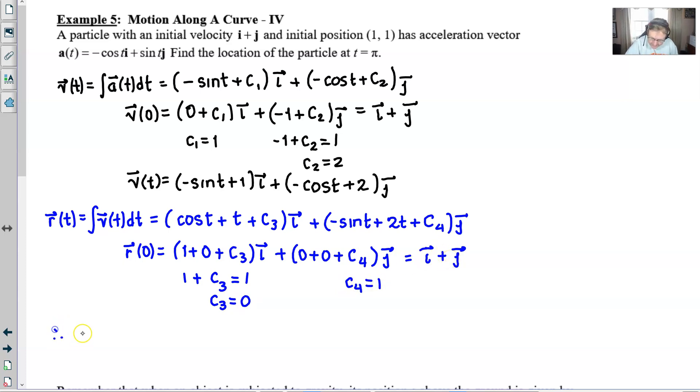So what that all says is that our vector for position, r(t), is cosine t plus t plus 0, which I don't really feel the need to write, plus negative sine t plus 2t plus 1 times r j. And at this point, we can answer our question.